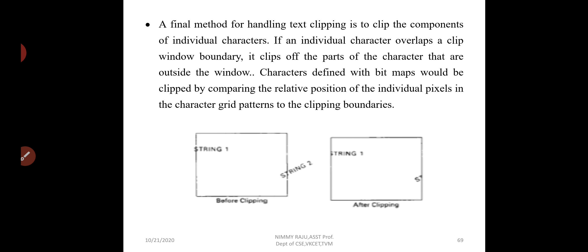The third and final method involves clipping the components of individual characters. If a character is completely inside the clip window, we save it. If it is completely outside, we discard it. This is the component check method, where each character's individual components are checked to determine whether they are inside or outside the clip window.